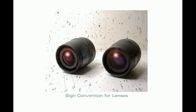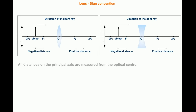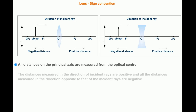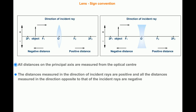Hi friends, let us try to understand sign convention for lenses. Look at the picture. All the distances on the principal axis are measured from the optical center. Look at the direction of the incident ray. The distances measured in the direction of incident rays are positive, and all the distances measured in the direction opposite to that of the incident rays are negative.